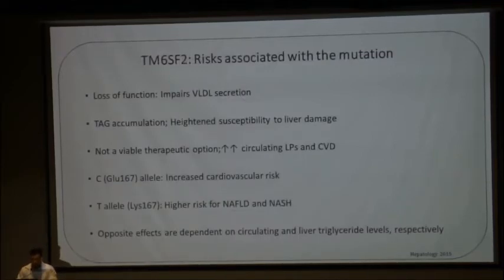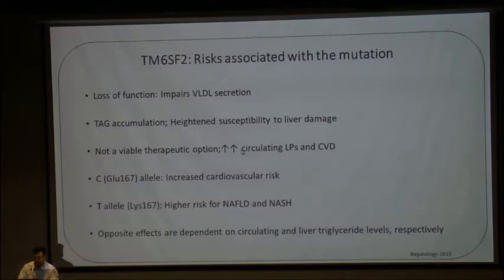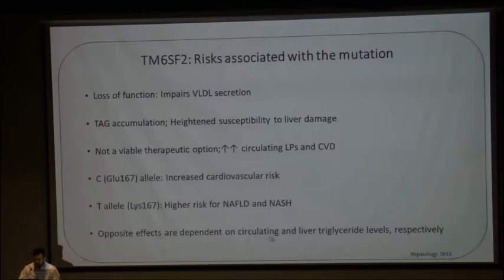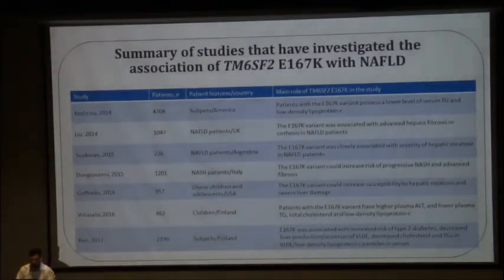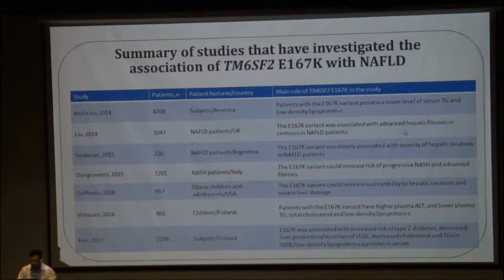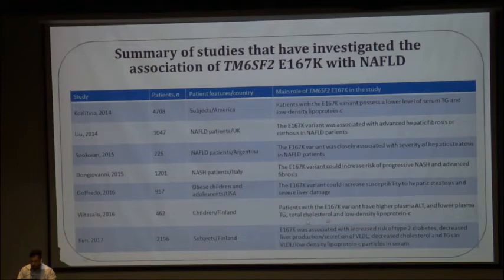The loss-of-function mutation impairs the secretion of VLDL, causes accumulation of triacylglycerol, and heightened sensitivity to liver damage. However, treatment is not usually a viable option here. It acts by increasing circulating lipoprotein, hence predisposing to risk of cardiovascular disease. The C-allele has been shown to have heightened cardiovascular risk, and the T-allele has been shown to have higher risk of NAFLD and NASH, showing opposite effects on circulating and liver triglyceride respectively. Multiple studies have shown that the TM6SF2 variant is associated with advanced fibrosis, cirrhosis, increased severity of hepatic steatosis, progressive increase in risk of NASH and advanced fibrosis, higher ALT level, and lower triglyceride, cholesterol, and lipoprotein levels.